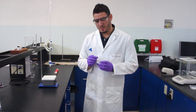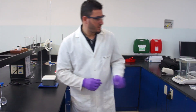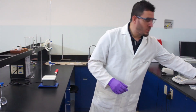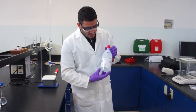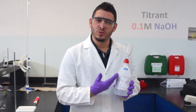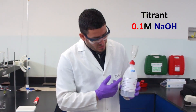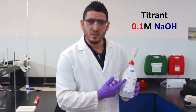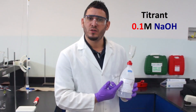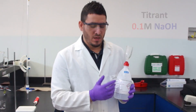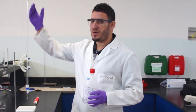So how can we do this? We will be using a titrant. A titrant is usually a solution that we know everything about — we know it's sodium hydroxide and we also know its concentration. This titrant you fill into the burette.